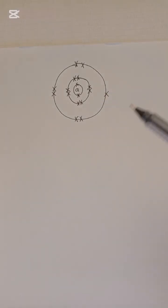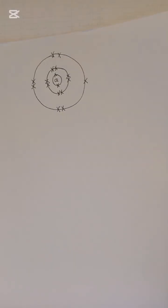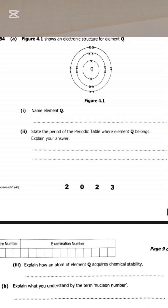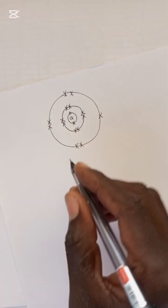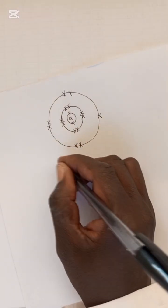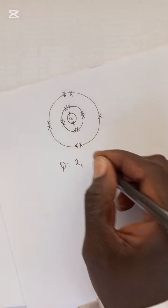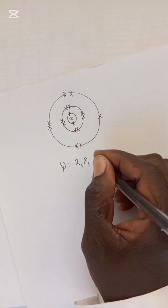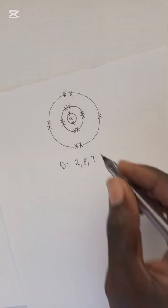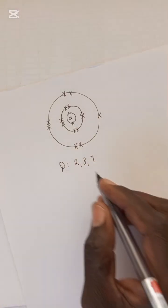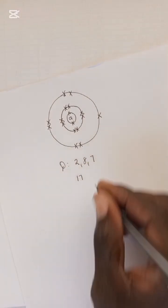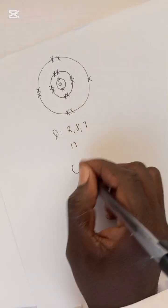The question continues to read: name element Q. That is question 4A Roman numeral one. Now from that, we can tell its electronic configuration for Q is the first shell has two, the second shell eight, the third shell seven. So if we total this, the sum gives us 17. What does this tell you? Q must have 17 as the proton number.